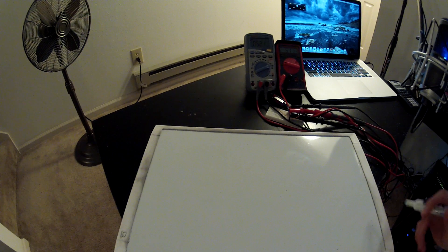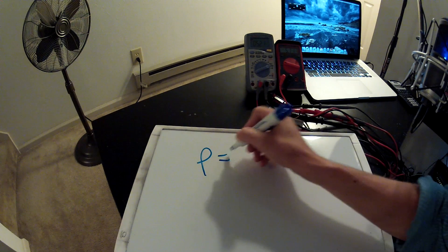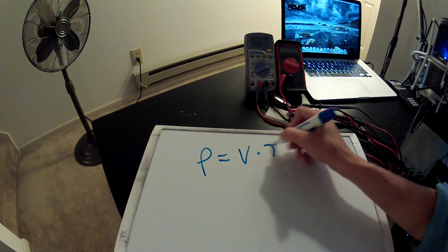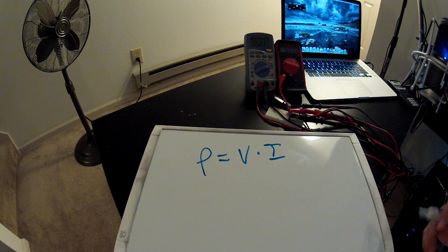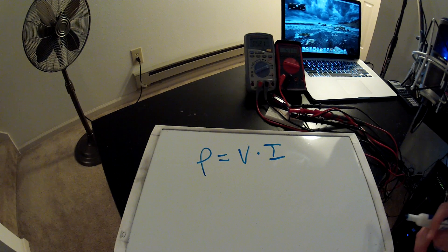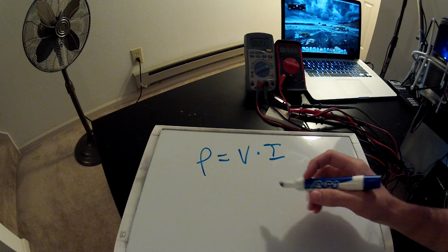power. Power equals V times I, and you'll see some tricks people use where they say power equals I squared R, or V squared over R. I'll just show you quickly how you get to